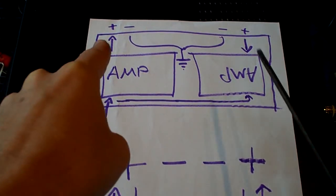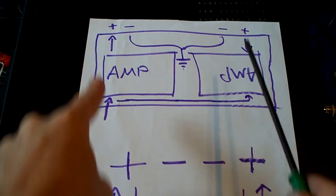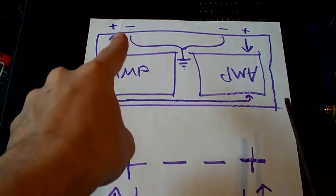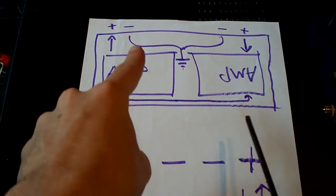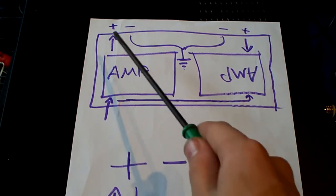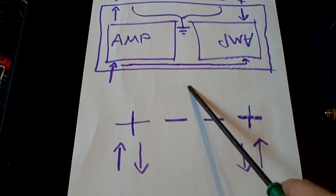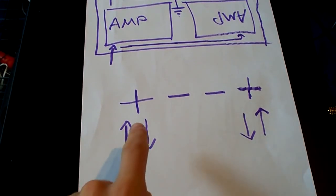So what happens in effect is while this one pushes, this one pulls and they work as a team, basically, providing double the output because instead of just one pushing and pulling, they both push and pull at opposite times, creating double the power, as you can see here.